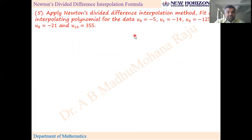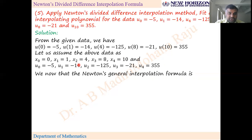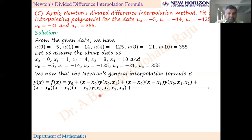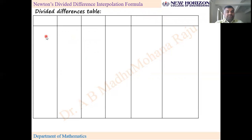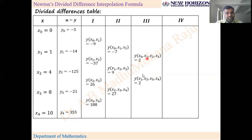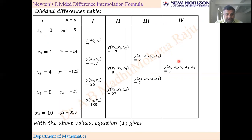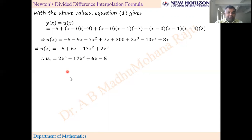Next problem: Instead of giving points with y notation, the problem uses suffix notation with u. Here u₀ = 0, u₁ = 1, u₄ = 4, u₈ = 8, u₁₀ = 10. List those as x₀, u₀ — treating u as y — and apply the same Newton's divided difference procedure. Construct the divided differences table with x values, u values (as y), first, second, and third order differences. Fourth order is not required. Substitute into equation 1 to obtain the polynomial y(x), and then substitute any required particular value.